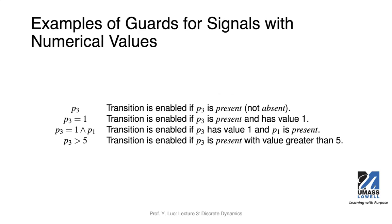If the signals are not pure signals — meaning they take numerical values — we check them differently. If P3 is a signal with a numerical value and we put just P3 as the guard, that means if P3 is present or not absent, this is true and the transition is taken. If you have an expression like P3 equals one, we check if P3 is present and its value is one. We can also do range comparison — for example, if the value is greater than five.